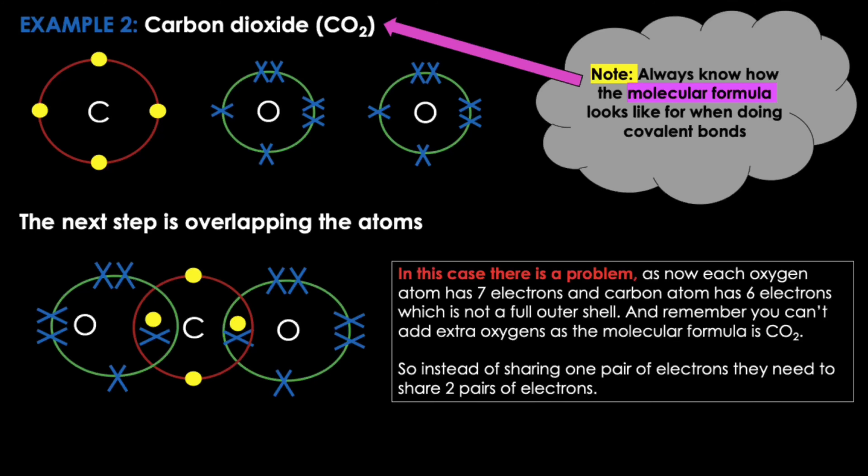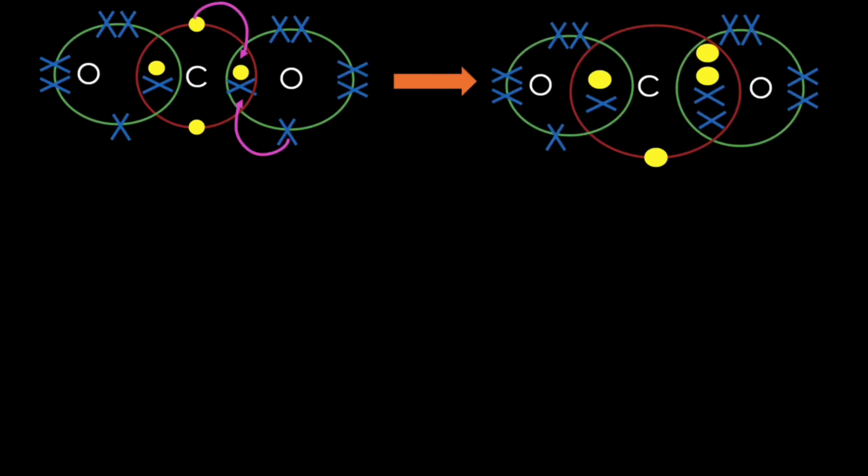So instead of sharing one pair of electrons, they need to share two pairs of electrons. Looking at the same diagram, the arrow shows the electron from the carbon atom being shared with the oxygen on the right, and the next arrow shows the electron on the oxygen being shared with the carbon. In the overlap between the carbon and the right oxygen, there are two electrons from oxygen and two from carbon being shared — this is how sharing two pairs of electrons looks. Oxygen on the left has seven electrons so it needs one more for a full outer shell, the same as carbon. The oxygen on the right already has eight electrons — a full outer shell — so no more sharing is required on that side.